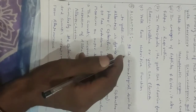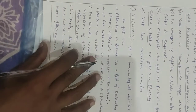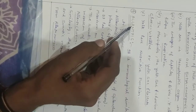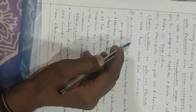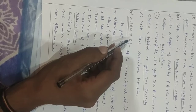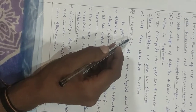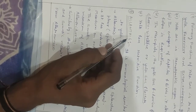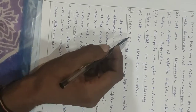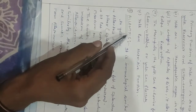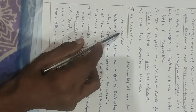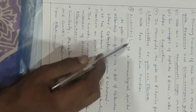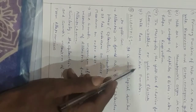Welcome dear students. In this video lecture we discuss the allantois, an extra-embryonic membrane. In the previous video lecture we discussed chorion, amnion, and yolk sac. Now we discuss allantois. It is immunologically similar to the yolk sac.